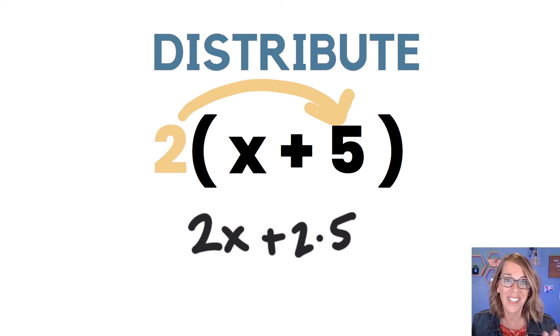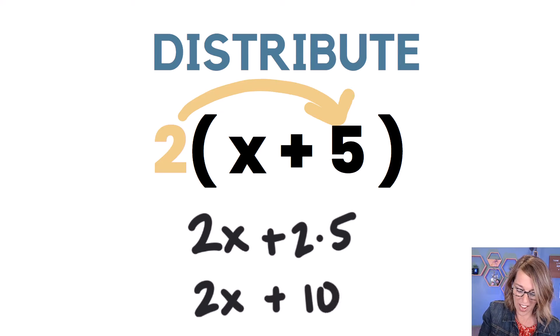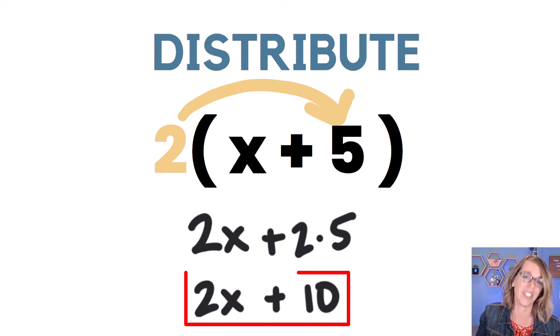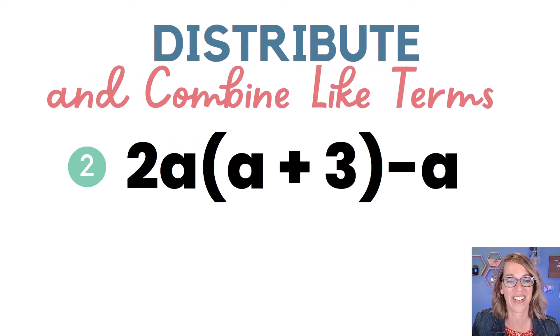I've got just a little bit of simplifying to do. I've got the two x and that one is great. And then two times five is equal to 10. And that's my simplified answer. Here comes the next one.